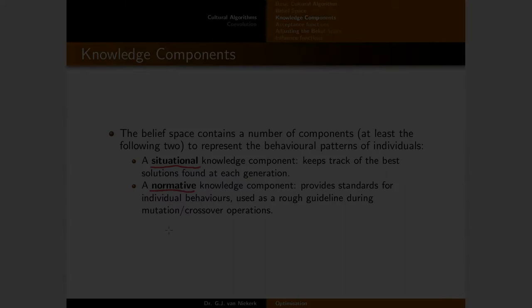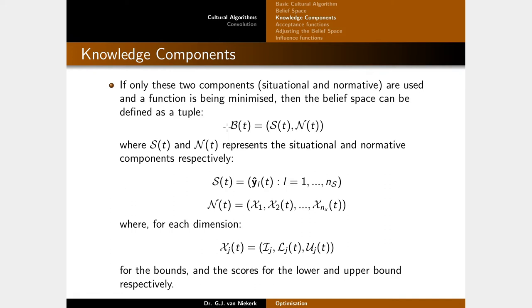If only situational and normative knowledge components are used — say we are minimizing some multi-dimensional function — then the belief space can be defined as a simple tuple of situational and normative knowledge. Additional components would extend that tuple. Situational knowledge stores the top solutions found so far (perhaps just the single best, or the top three). Normative knowledge stores a component for each dimension x1 through x_nx — each as a closed interval with a minimum and maximum value, along with fitness values l_j at the lower bound and u_j at the upper bound.